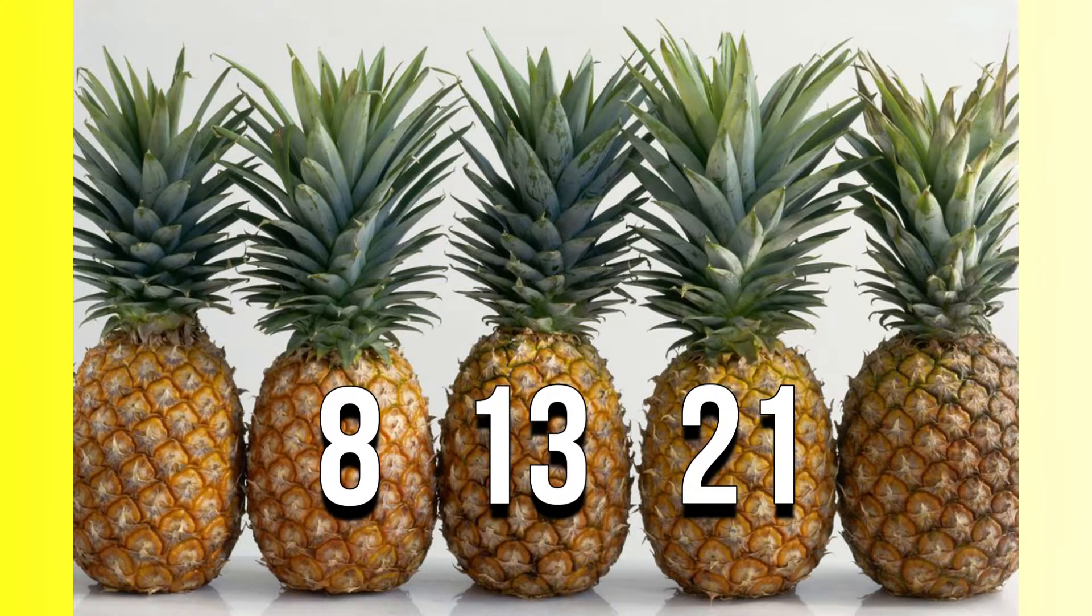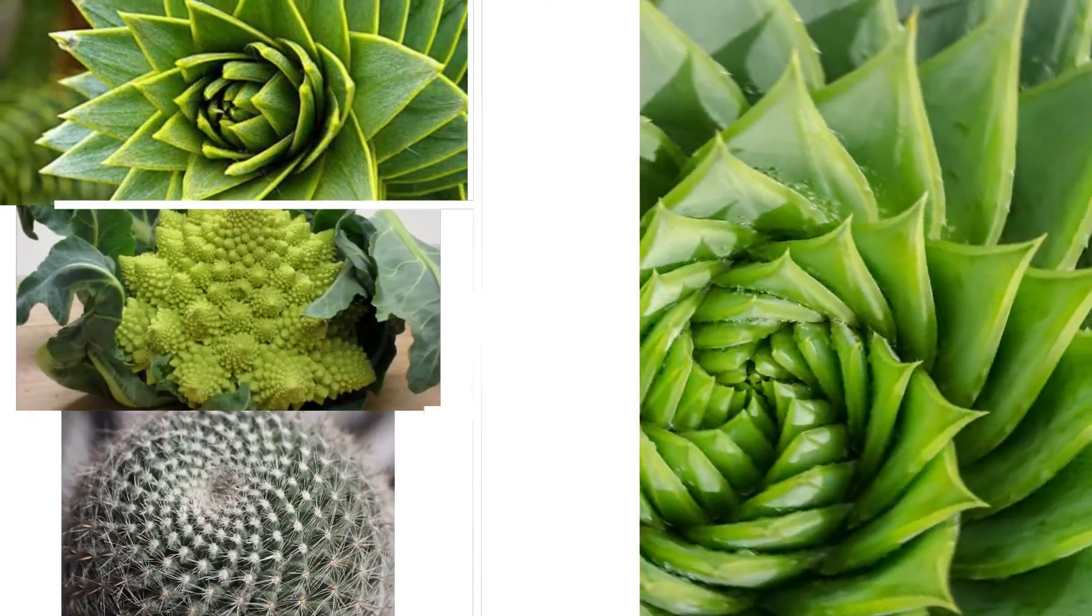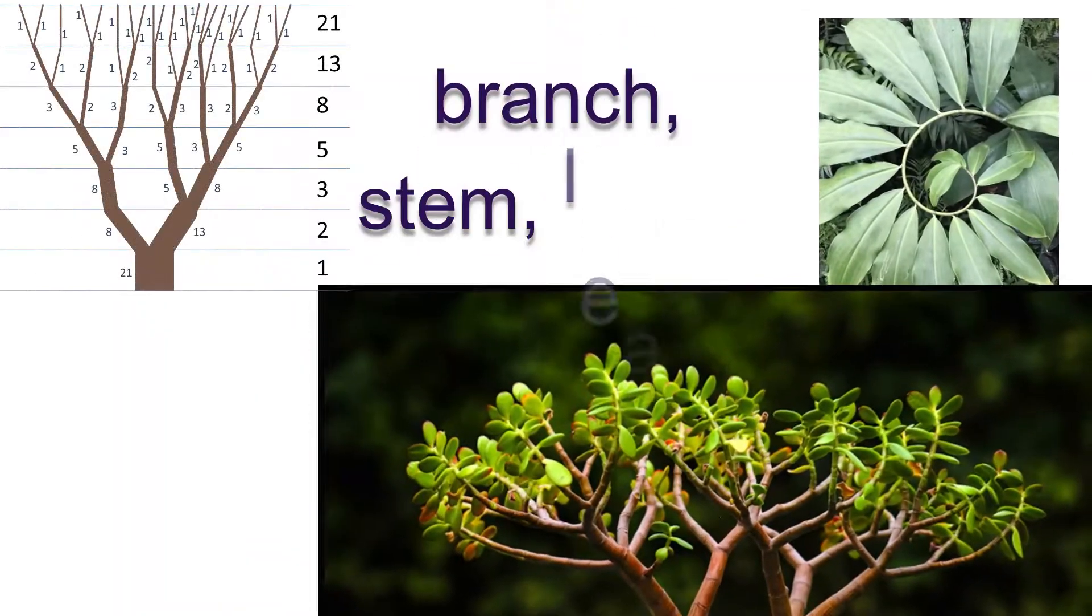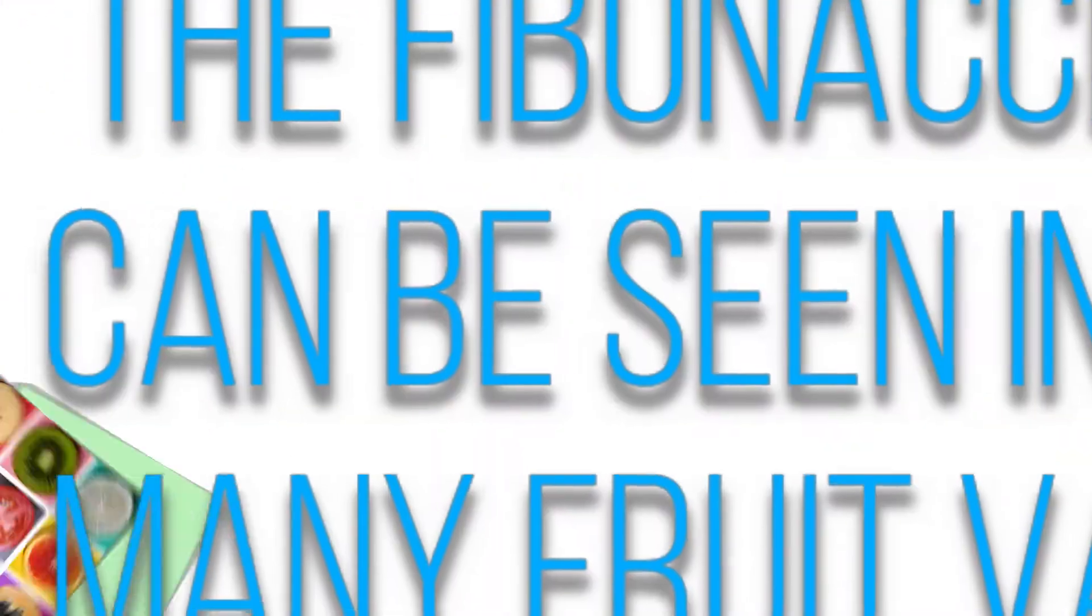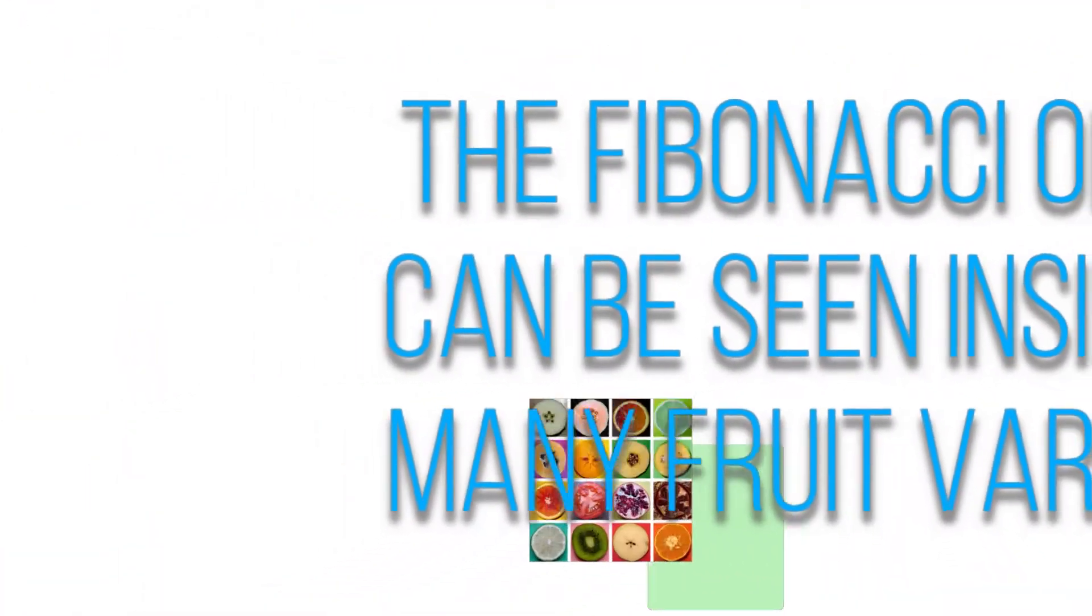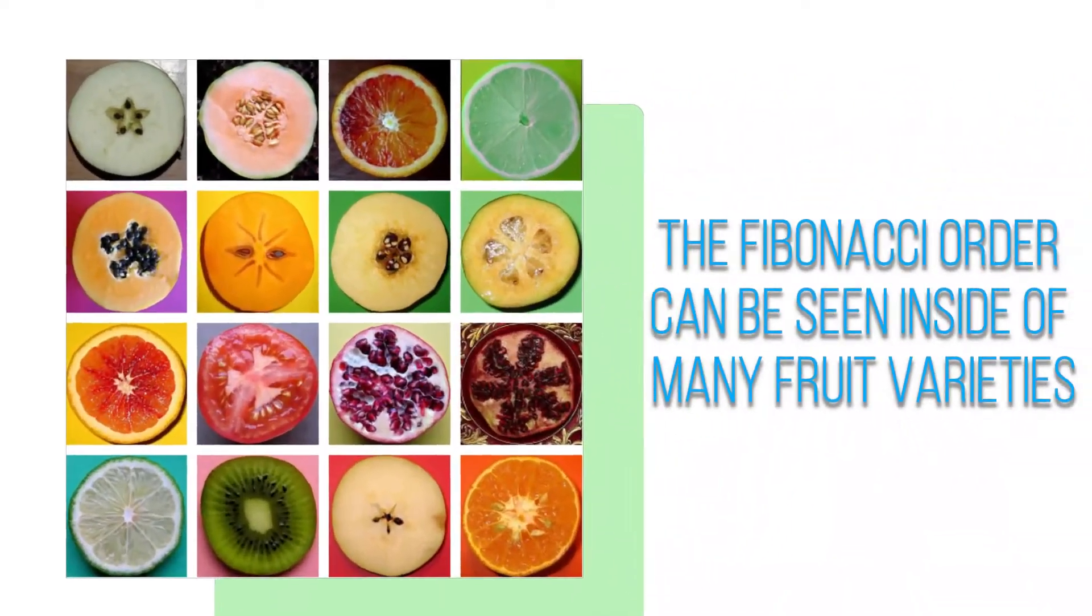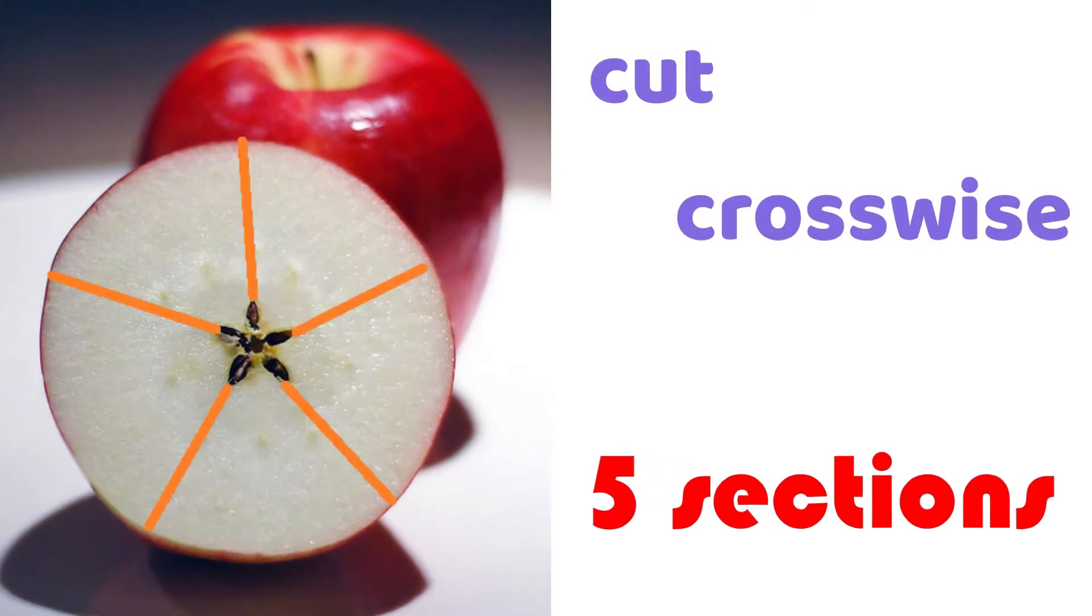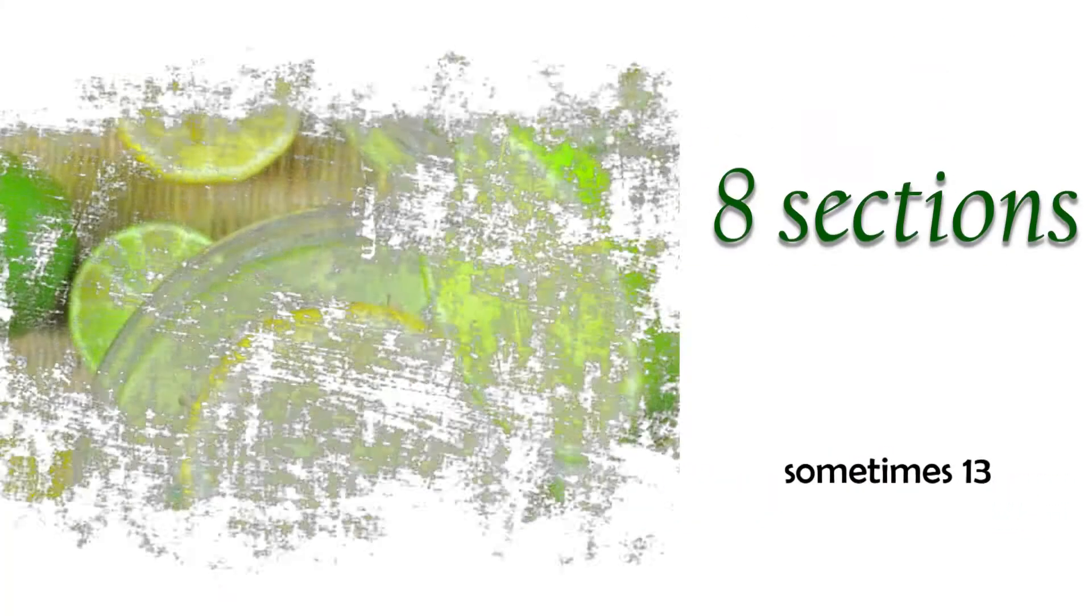The sequence is also observed in the growth of plant and vegetable branches, or even in some vines spinning around the stalk. Inside the fruit of many plants we can also observe the presence of Fibonacci order. Cut an apple crosswise and you will see five sections. A common citrus could have eight, and most bananas have three sections.